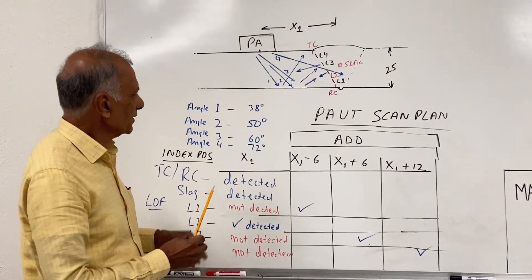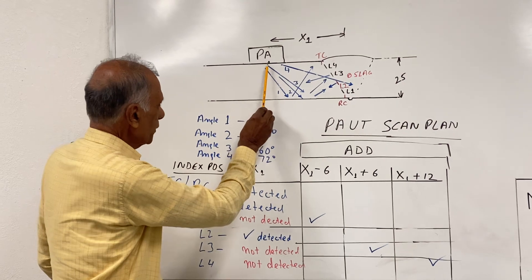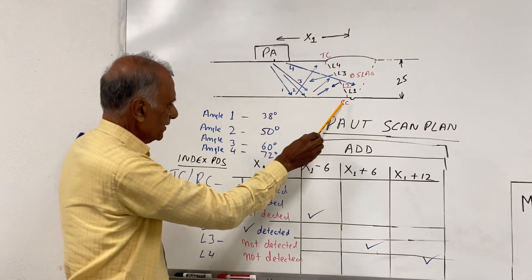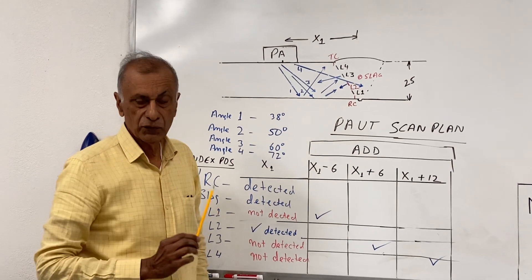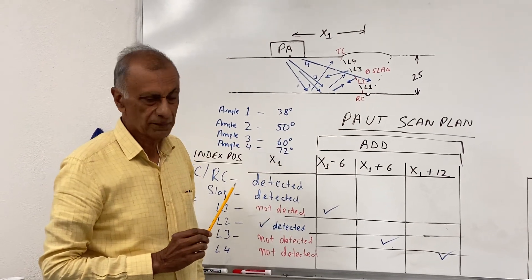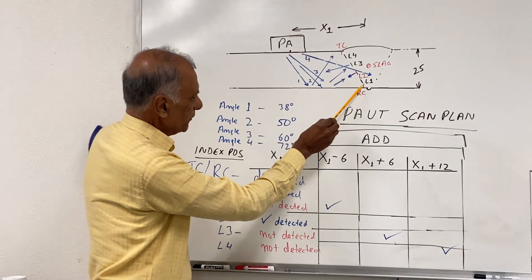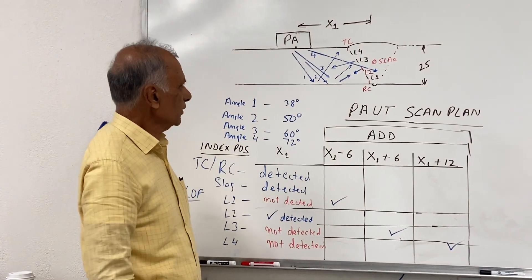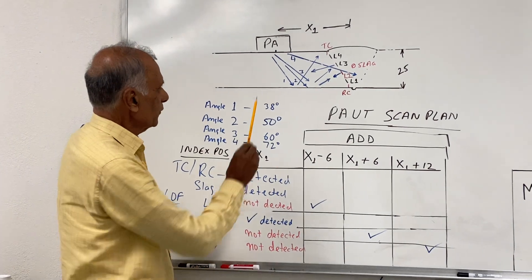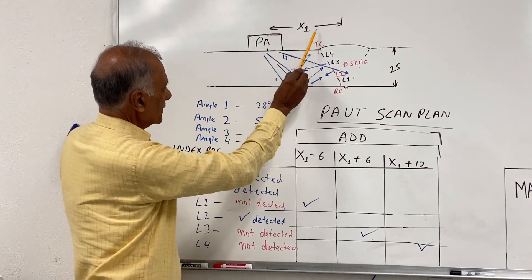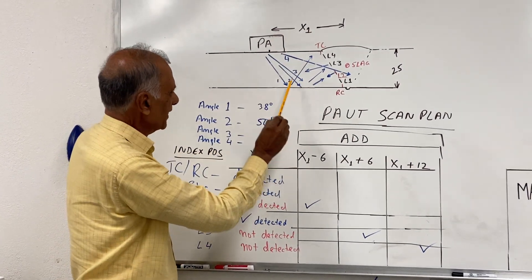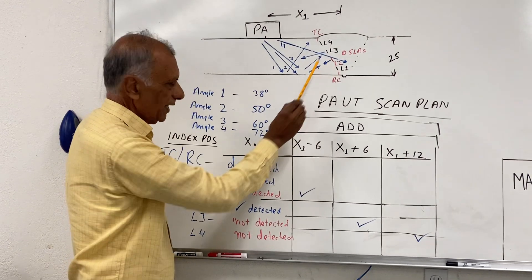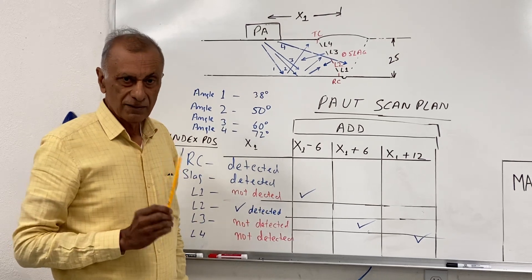The issue is that if you just keep the probe here at the X1 location, then the issue is with the detection of the lack of fusion flaws. I've shown here four lack of fusion flaws, L1, L2, L3, and L4. Now if I do a scan plan with one offset setting, which is X1, then according to this setup, all I will see is the L2 lack of fusion, because remember the sound, when it is incident on lack of fusion which is a planar flaw, will reflect back.